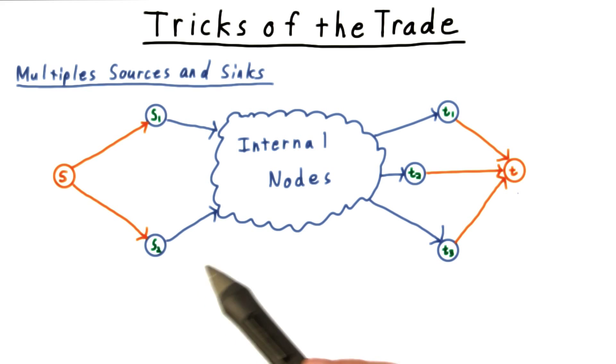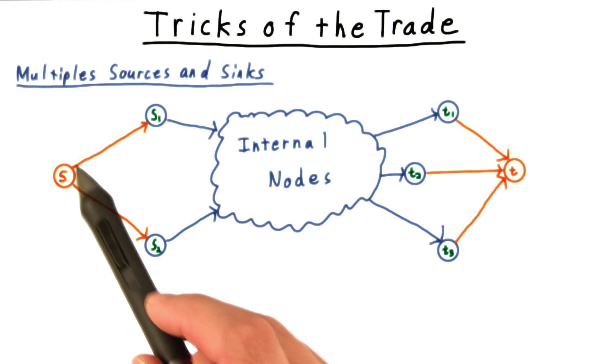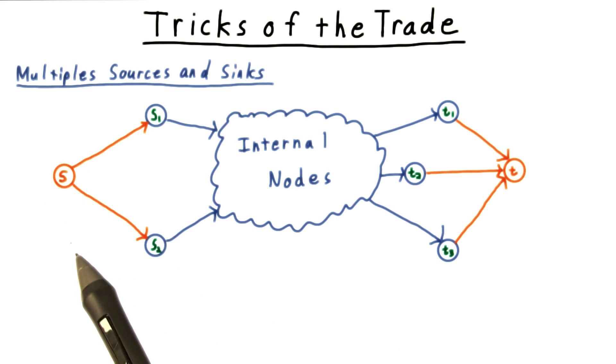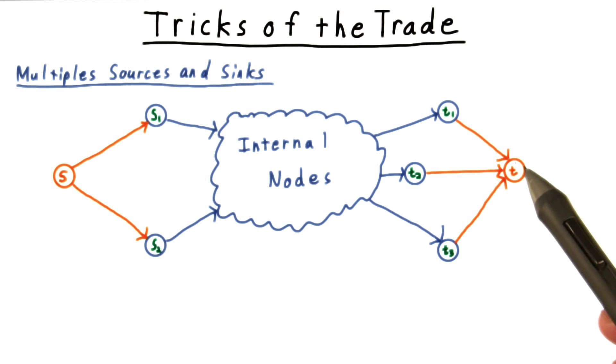Actually, however, this situation is quite easy to deal with. We can just add an artificial source node and connect that to the others with an infinite capacity. And similarly, add an artificial sink. So don't let that limitation trouble you either.